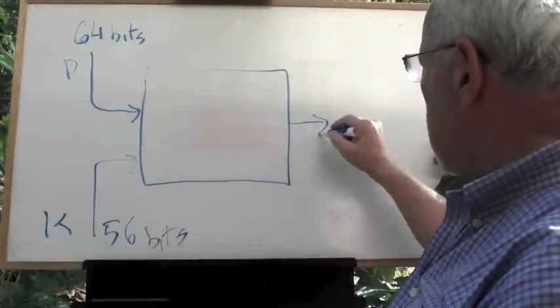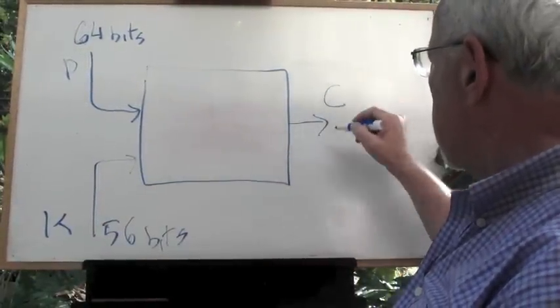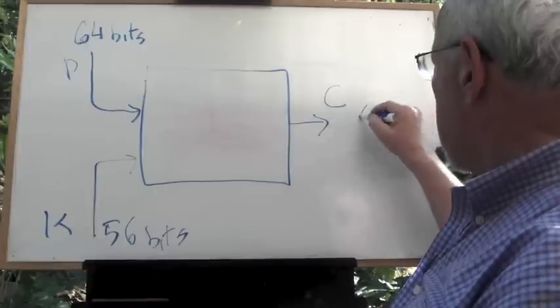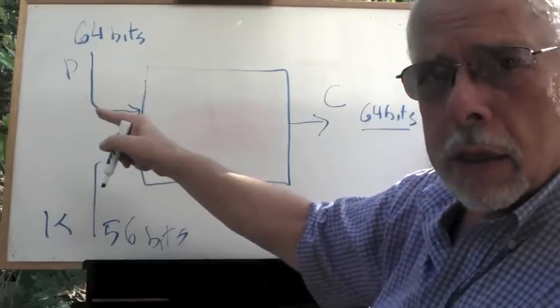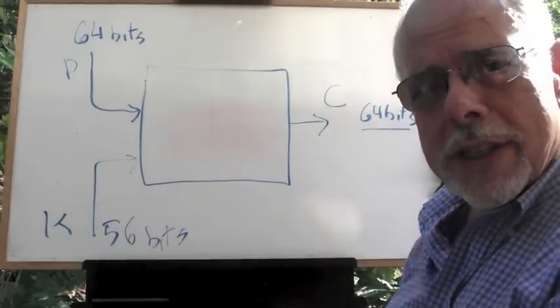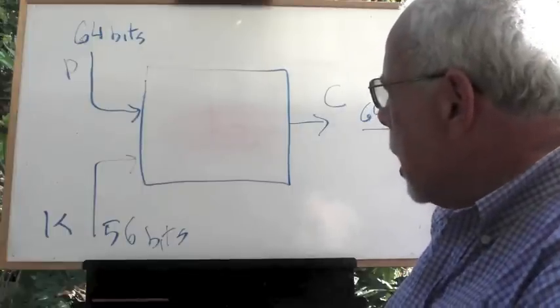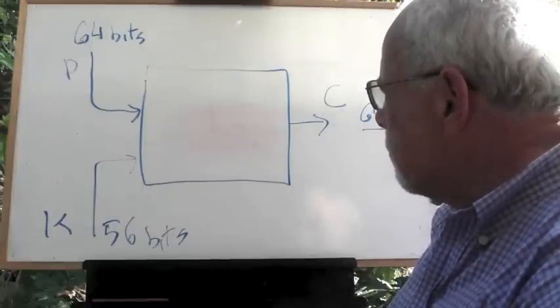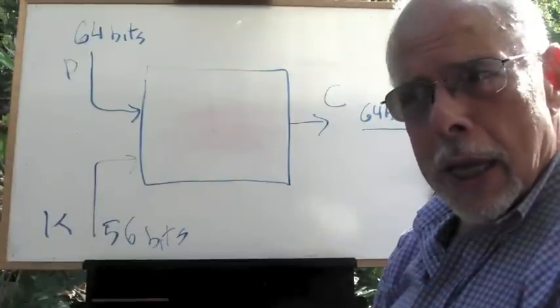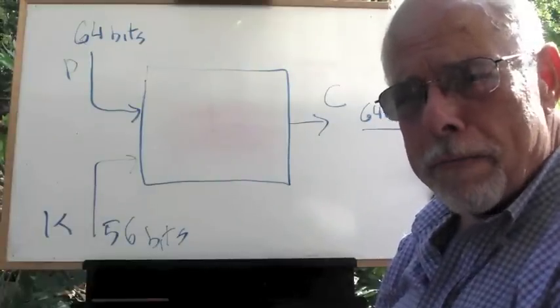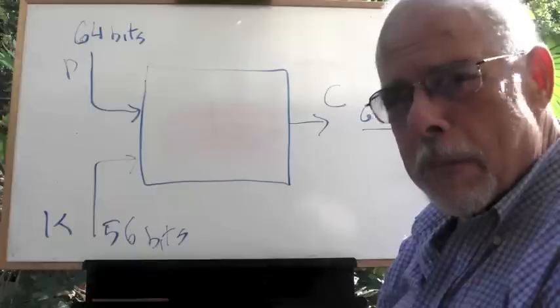And out we get C, the cipher, 64 bits. So a block of plaintext becomes a block of ciphertext. Now the question is, what happens if we pry open this box to see what happens inside?